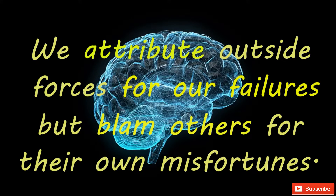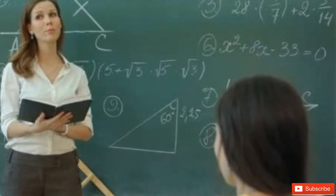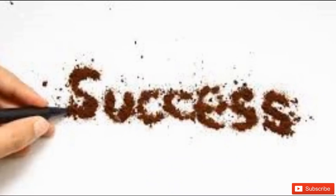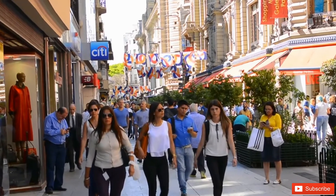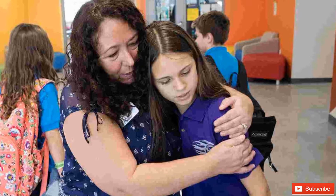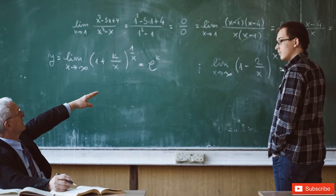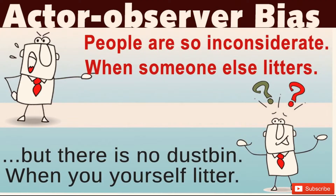Number 9: We attribute outside forces for our own failures, or blame others for their own misfortunes. In explaining behavior, we tend to attribute our own good fortune to internal factors and negative outcomes to external forces. When it comes to other people, however, we typically attribute their actions to internal characteristics. For example, if we get a bad grade on a paper, it's the teacher's fault; if a classmate gets a bad grade, it's because he didn't study hard enough. This tendency is known as the actor-observer bias.